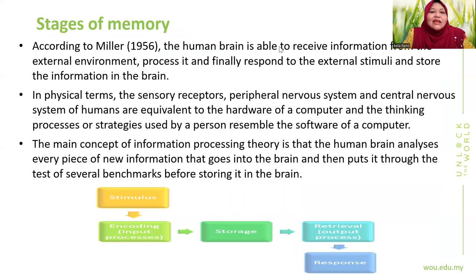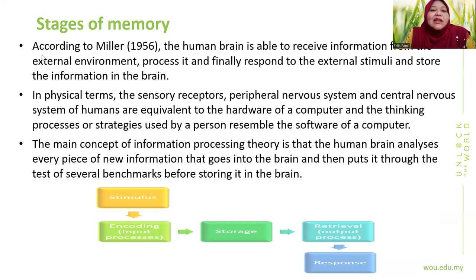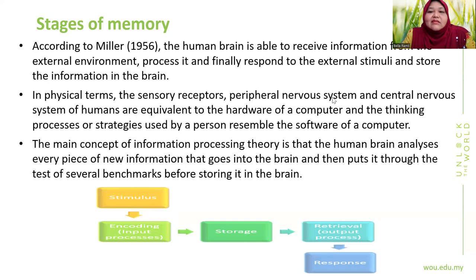Now we move to memory. When we discuss cognition, we touch on memory. According to Miller (1956), the human brain is able to receive information from the external environment, process it, respond to stimuli, and store information. The sensory receptor, peripheral nervous system, and central nervous system are equivalent to the hardware of a computer, while thinking processes or strategies used by a person resemble the software. Biological psychology studies the hardware aspect; cognitive psychology studies the software — how we make sense of information received through our sensory organs.